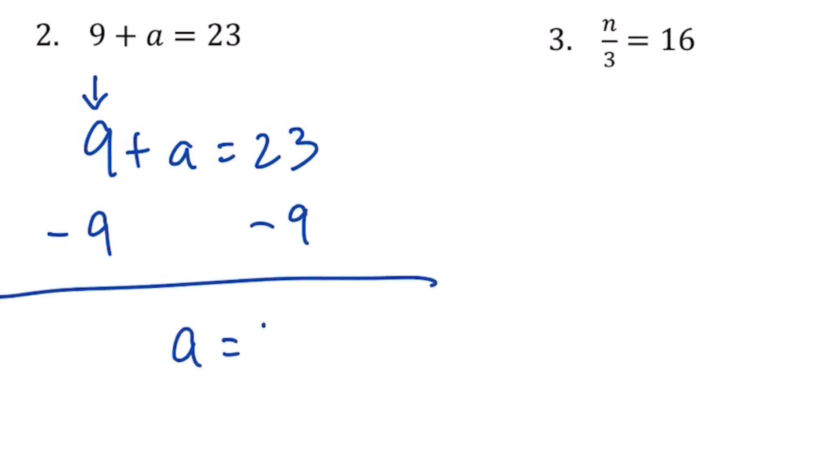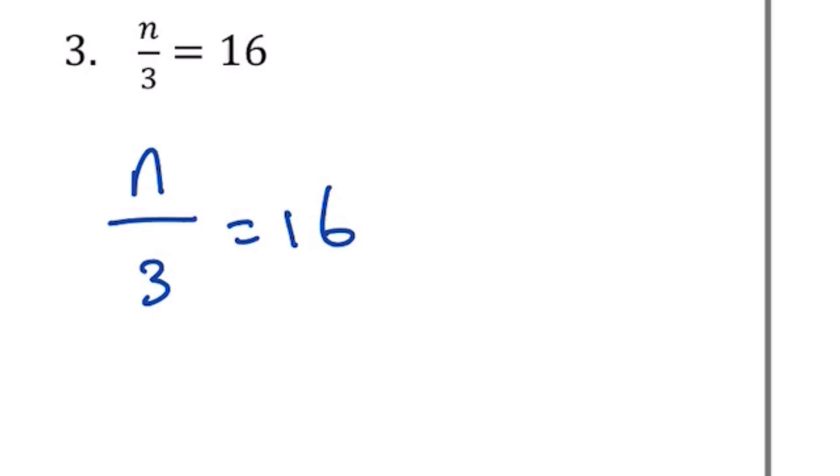Question number 3: we have n being divided by 3, which equals 16. So n is being divided by 3, so I'm going to do the inverse. I'm going to do the multiplication part here.